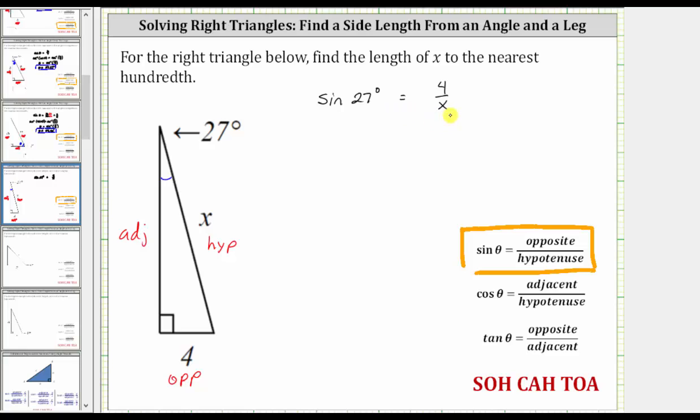And now to solve for x, let's clear the fraction from the equation by multiplying both sides by x. So we will multiply the left side by x and the right side by x. On the left, sine 27 degrees times x is equal to x sine 27 degrees.